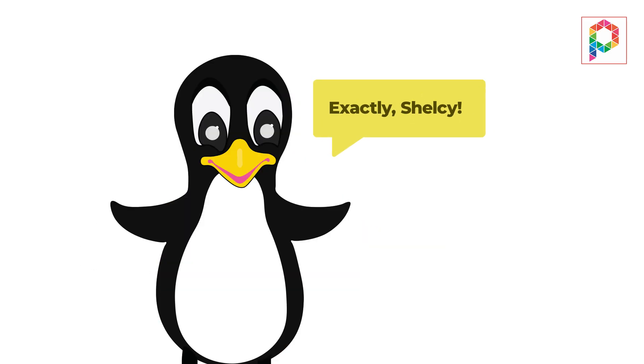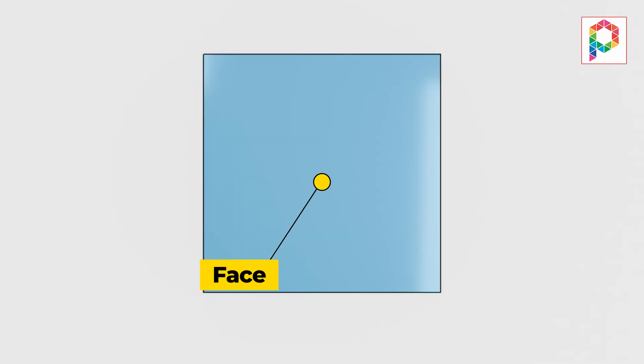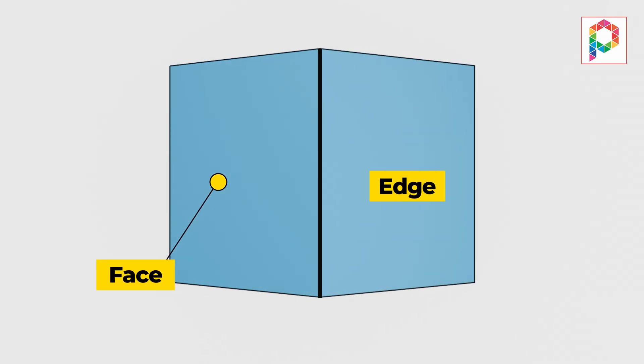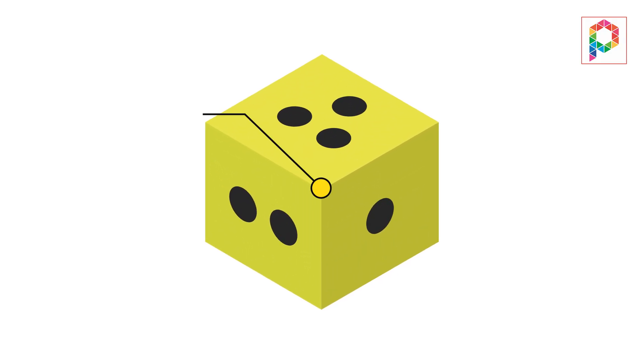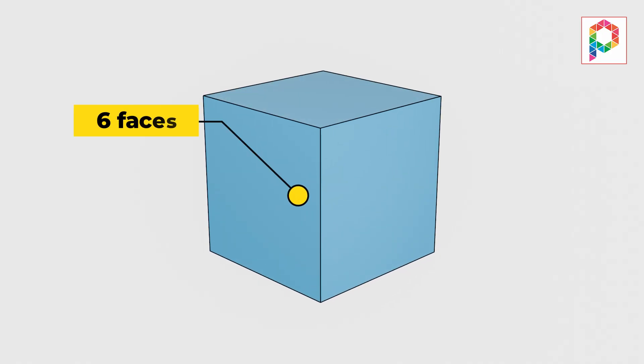Exactly Chelsea! A face is a flat surface, an edge is where two faces meet, and a vertex is the point where edges meet. So a cube, like a dice, is a 3D shape. Yes, a cube has six square faces.